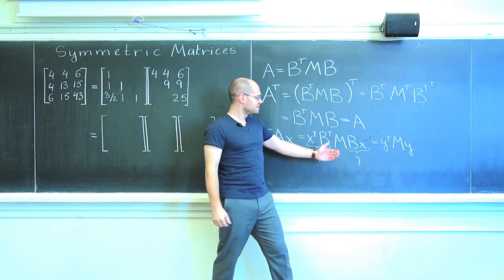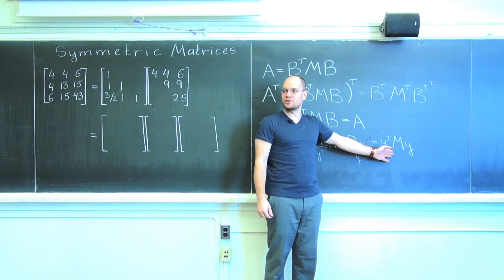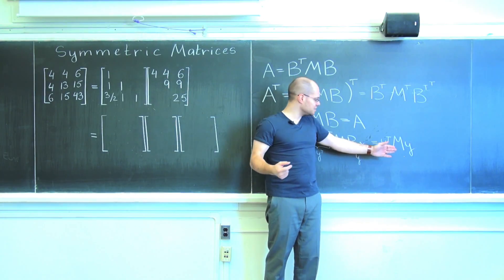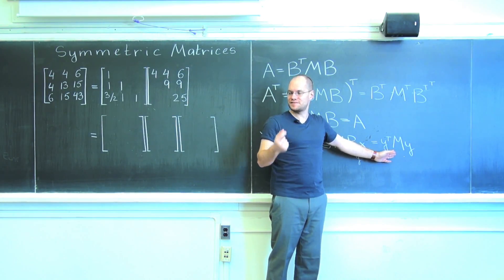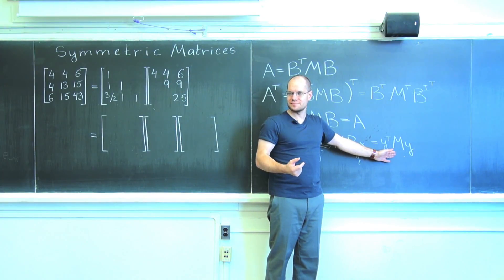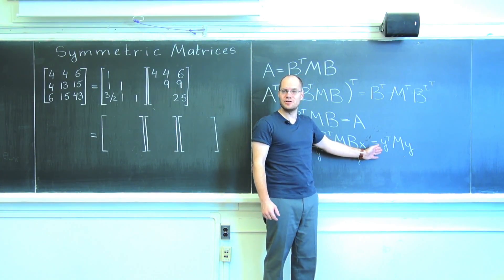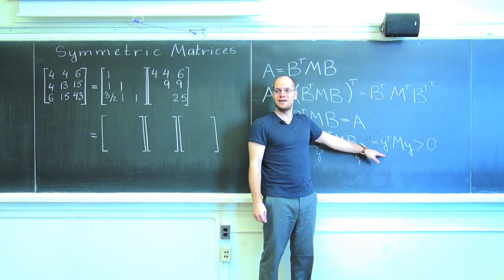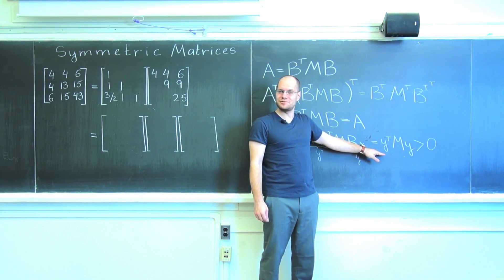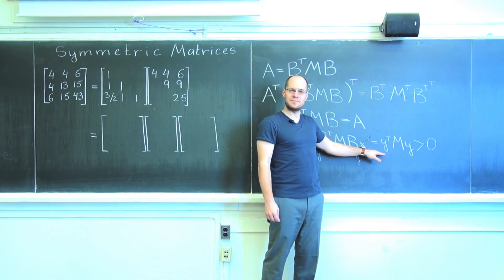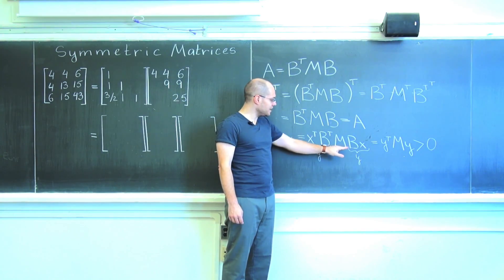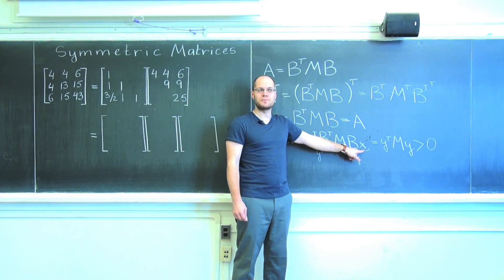It's the product of the individual transposes in the reverse order, so that's Y transpose, and I'm left with Y transpose M Y. The question is, is this always greater than zero? On the one hand it appears so, because I also told you that M is a positive definite matrix. So as long as Y is non-zero, this is guaranteed to be positive. But can it be the zero vector? Yes it can, for the same reason as last time. If the columns of B are linearly dependent and X is a vector from the null space of B, then Y will end up being zero.